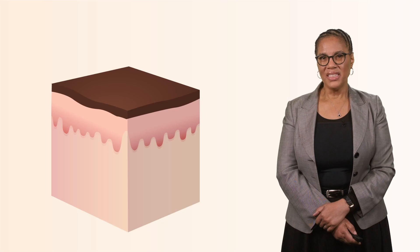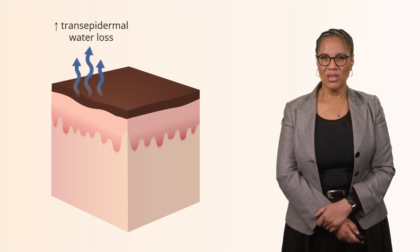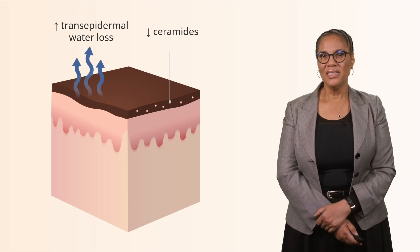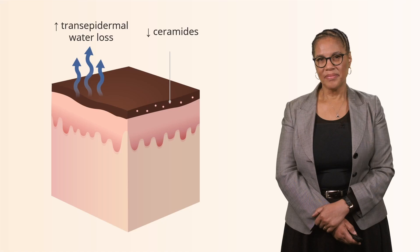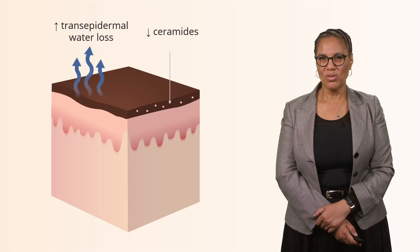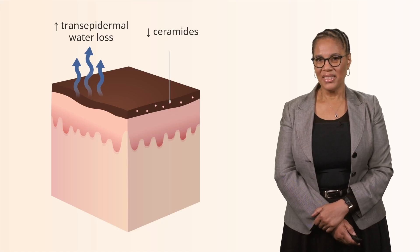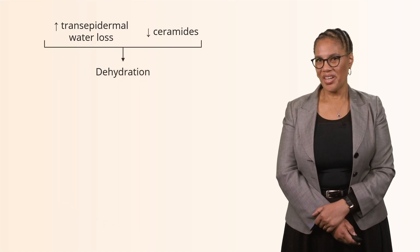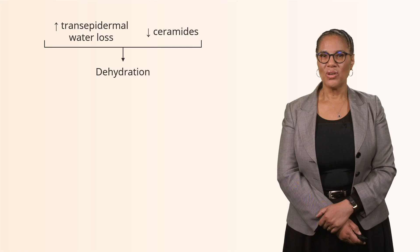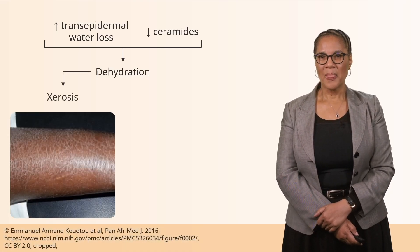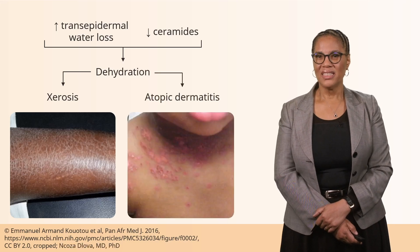The second difference is increased transepidermal water loss and decreased ceramides, which we also find in people with melanin-rich skin. The combination of increased transepidermal water loss and decreased ceramides makes the skin more prone to dehydration and dryness. This can lead to a condition called xerosis, which means dry skin, and both xerosis and atopic dermatitis are seen more commonly in melanin-rich skin.